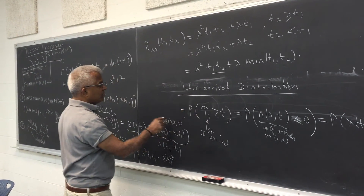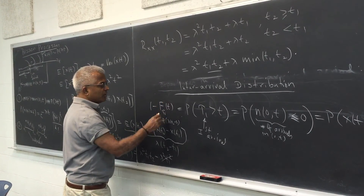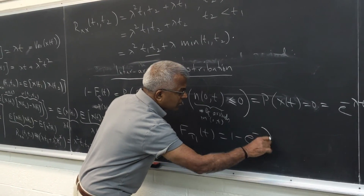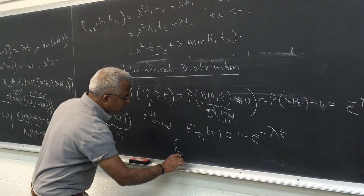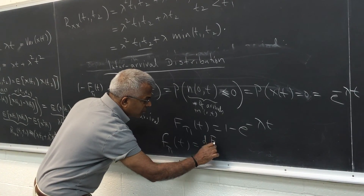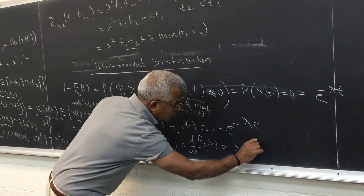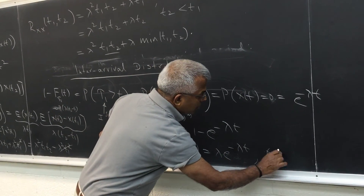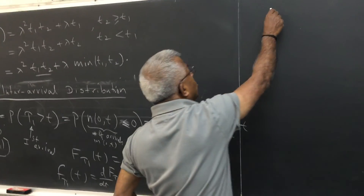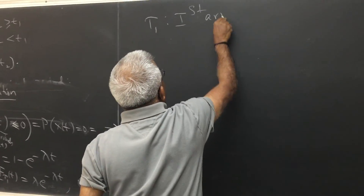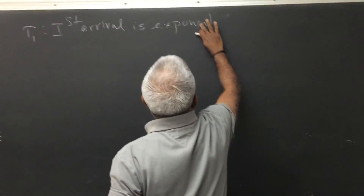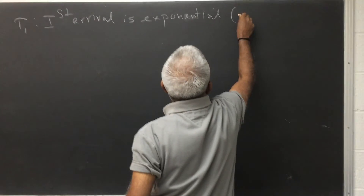From the definition of the Poisson distribution, putting k equal to zero, we get that to be e raised to minus λt. In terms of the distribution function, this is 1 minus F_{τ₁}(t), so F_{τ₁}(t) equals 1 minus e^{-λt}. Taking the derivative, the density function is λe^{-λt} for t positive — an exponential density. So τ₁, the first arrival, is exponentially distributed with parameter λ.